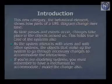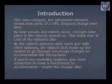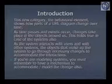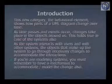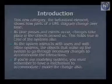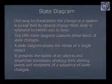This behavioral element category shows how parts of a UML diagram change over time. As time passes and events occur, changes take place in objects around us — and this holds good for systems we develop as well. One way to characterize the change in a system is to say that its objects change their state in response to events and to time.